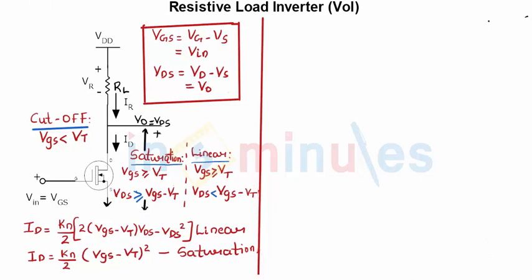In the previous clip we have seen the value of VOH equal to VDD for a resistive load inverter by identifying that the transistor NMOS operates in cutoff region and equating the value of current through the NMOS to the value of the current through the load resistance RL.